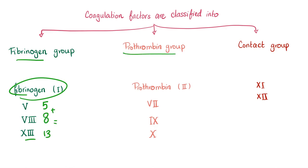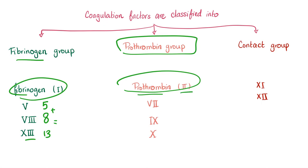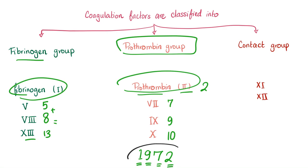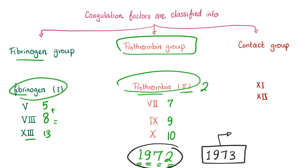Next we have the prothrombin group. The first member is prothrombin, which is factor 2. After this we have factor 7, factor 9, and factor 10 — so: prothrombin, 7, 9, 10, or 2, 7, 9, 10. You can remember it as 1972 where the 1 represents 10, reading backwards: 10, 9, 7, 2. This should remind you of the cranial autonomic (parasympathetic) nerves: 10, 9, 7, 3 — vagus, glossopharyngeal, facial, and oculomotor.